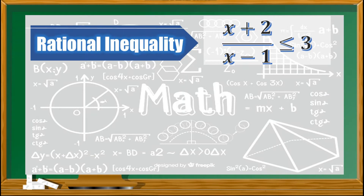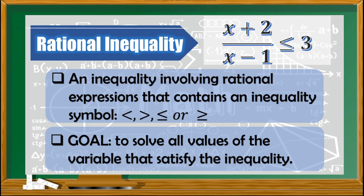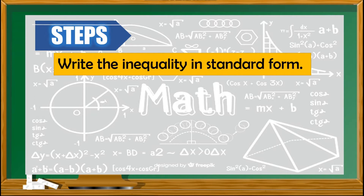First, let us define rational inequality. The given example here, x plus 2 over x minus 1 is less than or equal to 3, is a rational inequality because it contains a rational expression which is x plus 2 over x minus 1, and there is an inequality symbol which is less than or equal to. When we have a rational inequality, the goal is to solve for all values of the variable that will satisfy the inequality. The first step is to write the inequality in standard form — a single fraction on one side of the inequality symbol and 0 on the other side.